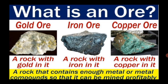The properties of minerals become clear from their characteristics: color, luster, hardness, shape or fracture, and streak. A rock that contains enough metal or metal compound so that it can be mined profitably is called an ore. For example, gold ore is rock with gold in it, iron ore is rock with iron in it, and copper ore is rock with copper in it.